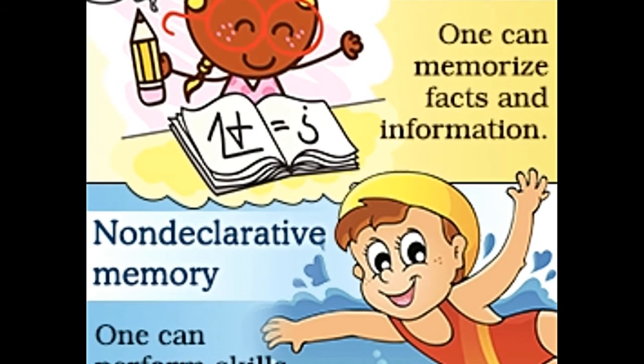Declarative memory is a part of long-term memory where the mind stores facts, data, knowledge, and information intentionally. Therefore it is also known as fact memory or explicit memory. The mind has been conditioned consciously to recall things, and it takes effort on the part of a person to learn and store information. Example: one's knowledge about common facts and data.